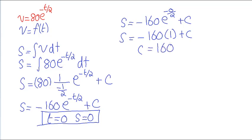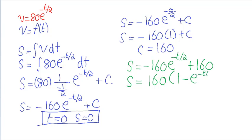Going back to our equation and substituting into that equation, we will get the following expression. S is equal to minus 160, E to the minus t over 2 plus 160. Therefore, in the end, we get S equals 160, open bracket, 1 minus E to the minus t over 2. And that's the final expression for the displacement of the torpedo with respect to time.